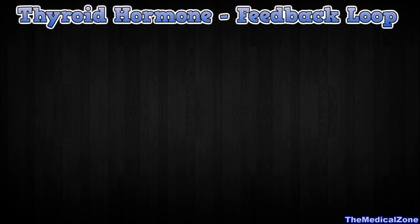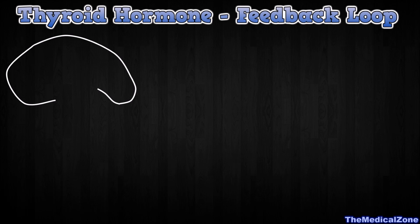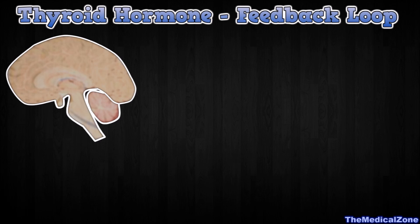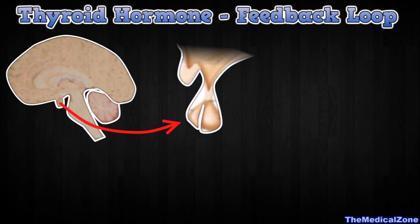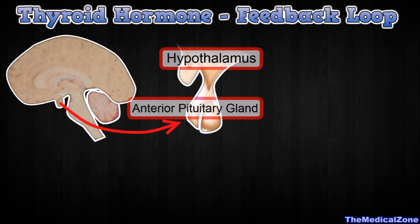Welcome to the Medical Zone. We will discuss the thyroid feedback mechanism. The production and release of thyroid hormones, thyroxine and triiodothyronine, is controlled by a feedback loop system which involves the hypothalamus, the anterior pituitary gland, and the thyroid.